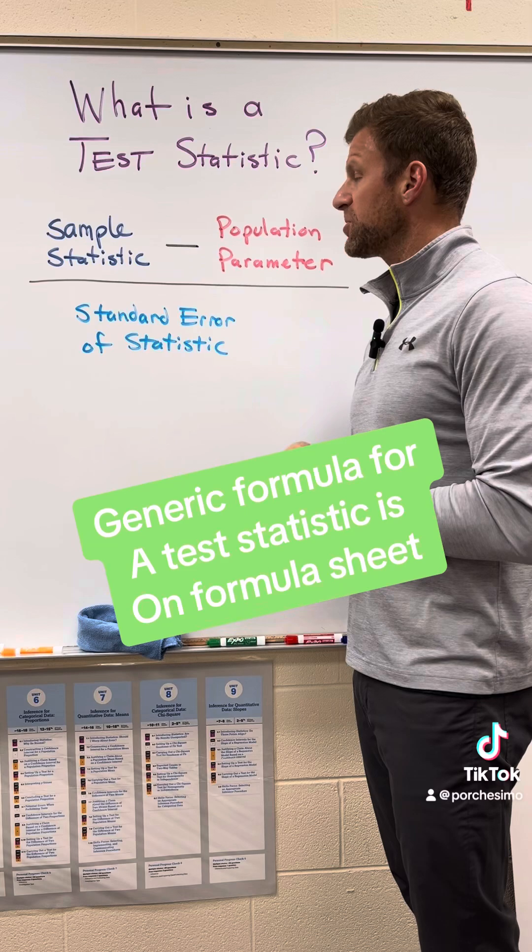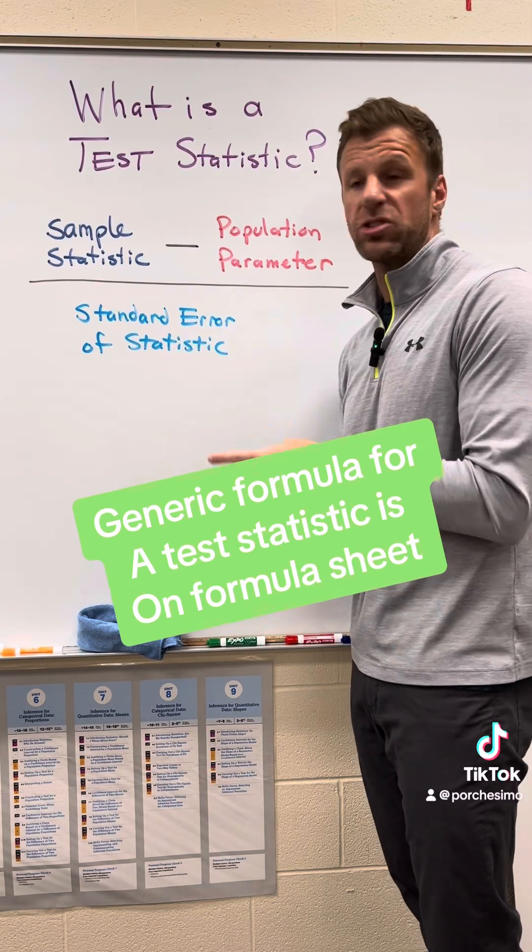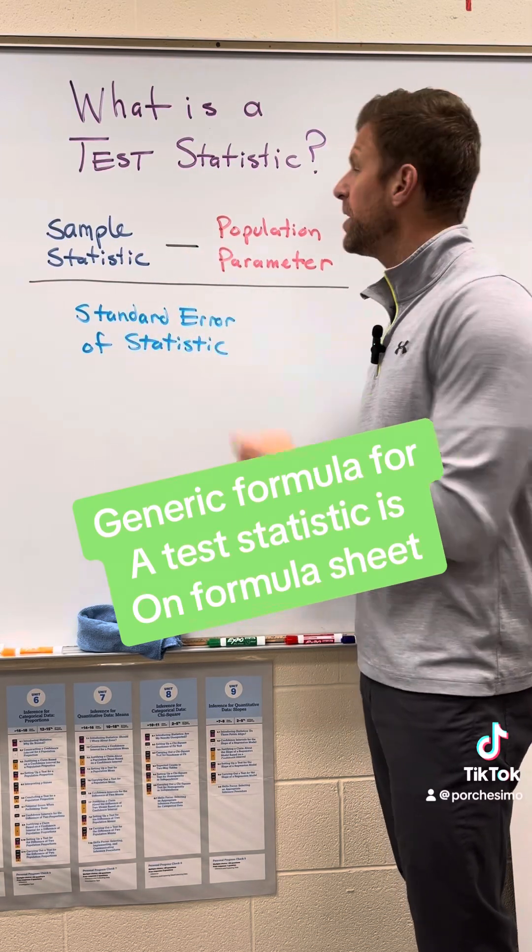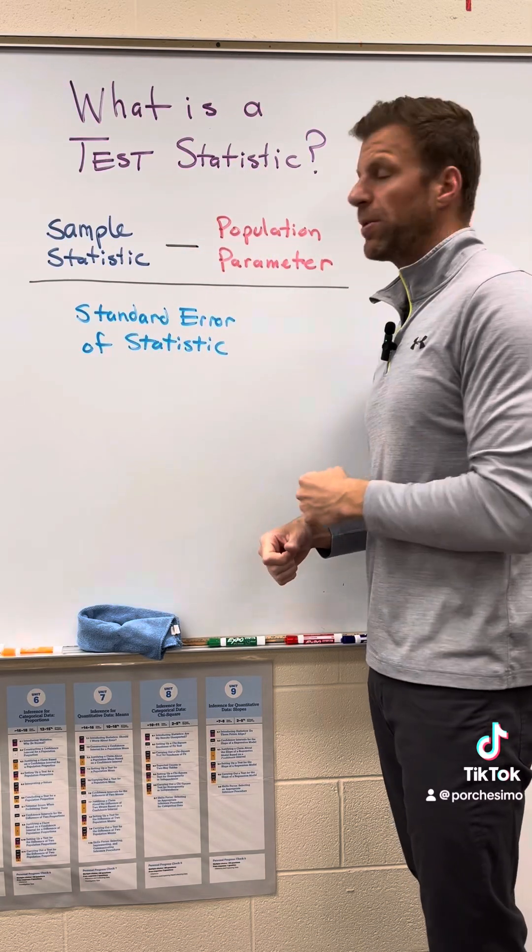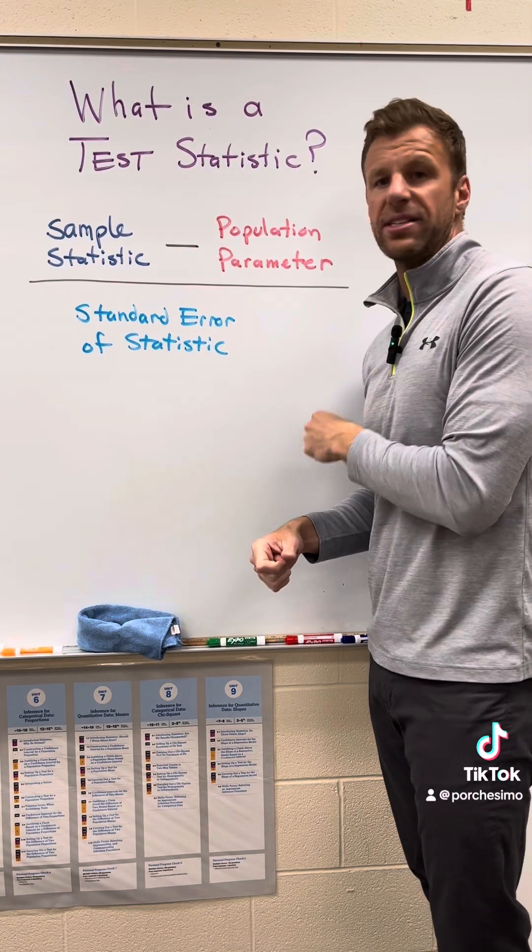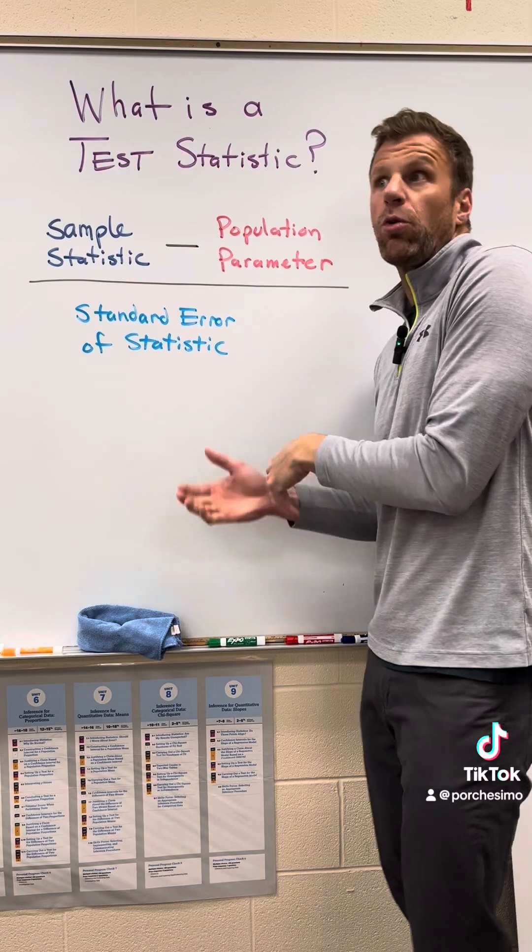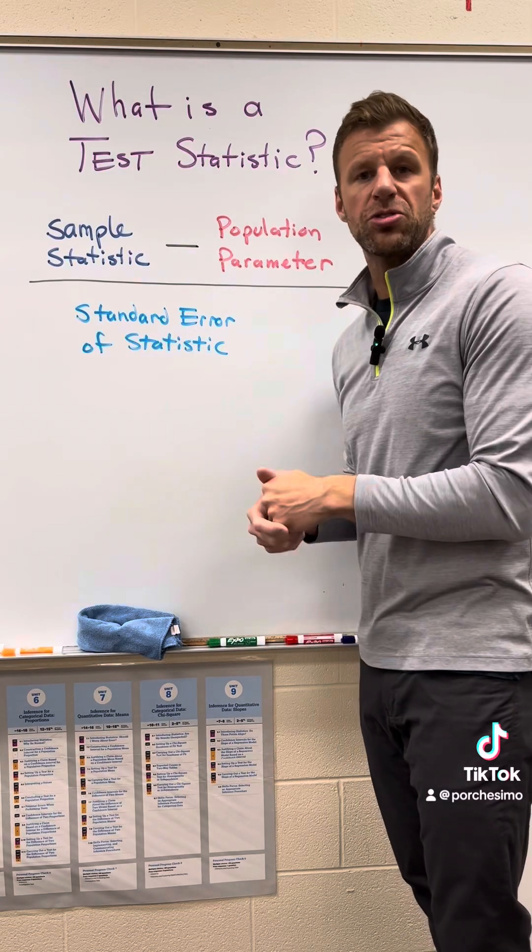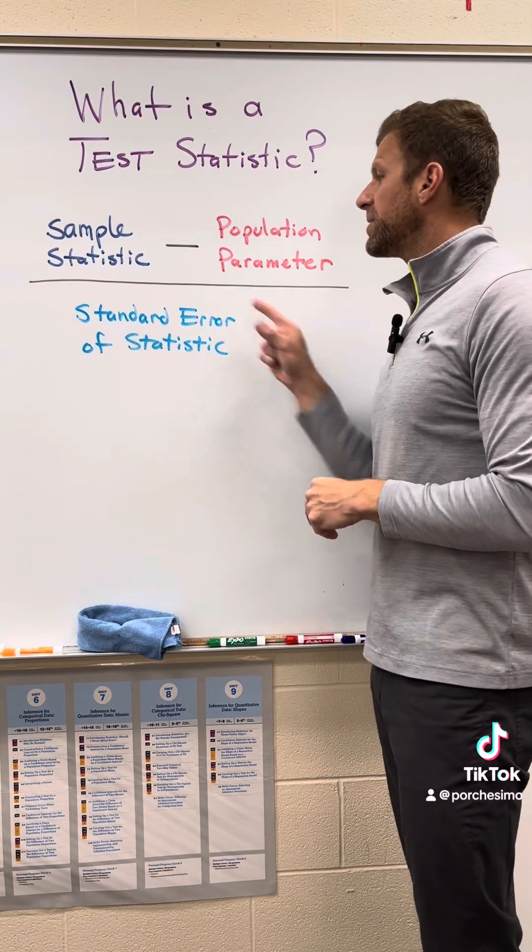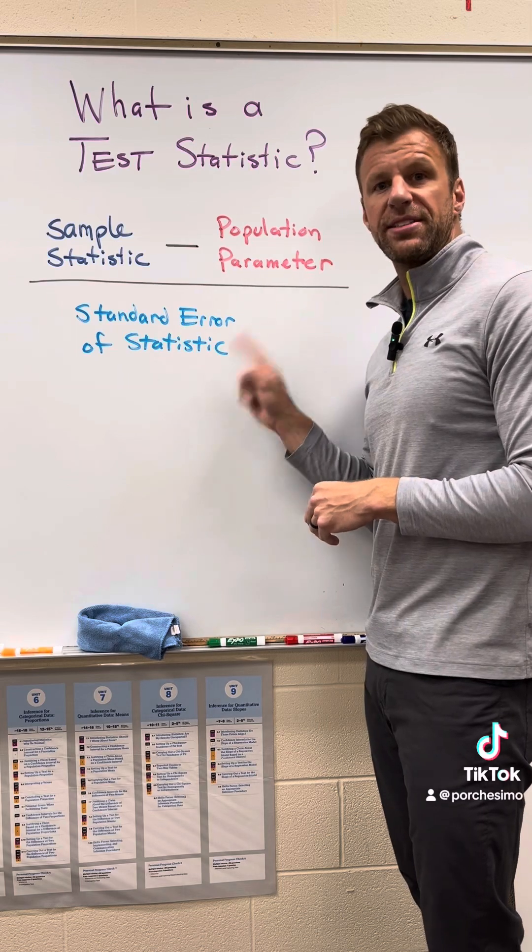You take a sample statistic—it's either going to be a p hat, an x bar, or a sample slope, something that you observed—minus a population parameter. This is going to come from your null hypothesis. This is what you were told was true or we thought was true or what used to be true, and then you divide by the standard error of the statistic.